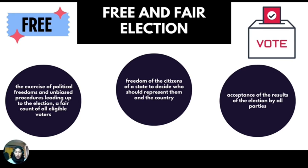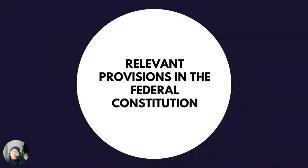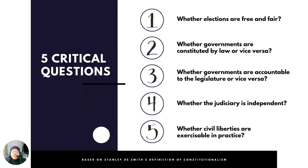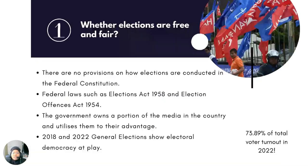Now I will be passing to my groupmate to talk about the relevant provisions in the Federal Constitution. Assalamualaikum warahmatullahi wabarakatuh. My name is Ani Sabifah Bt. Zarianzin and I will be presenting on the relevant provisions in the Federal Constitution that relate to constitutionalism. Constitutionalism is a broad and abstract concept. Therefore, how do we assess or measure whether constitutionalism exists or how much a nation adheres to it? Here are five critical questions raised by legal scholar Andrew Harding based on Stanley Dismith's definition of constitutionalism. By asking these five questions, it is easier for us to see whether a country practices these five core values of constitutionalism.